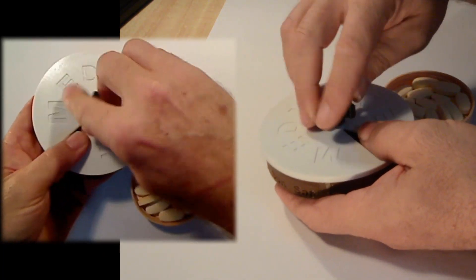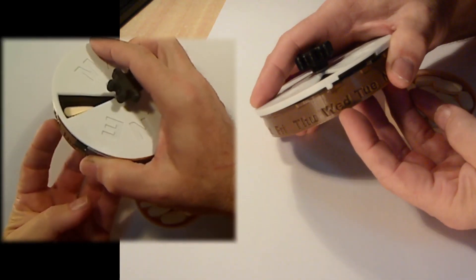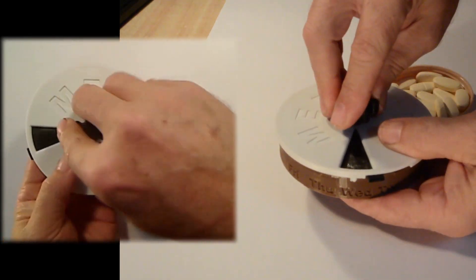Tighten down the knob until the lid is firmly held in place, but can still be rotated freely, and check that you have aligned the day marker tab on the lid to the correct starting day on the container. Then you are good to go.